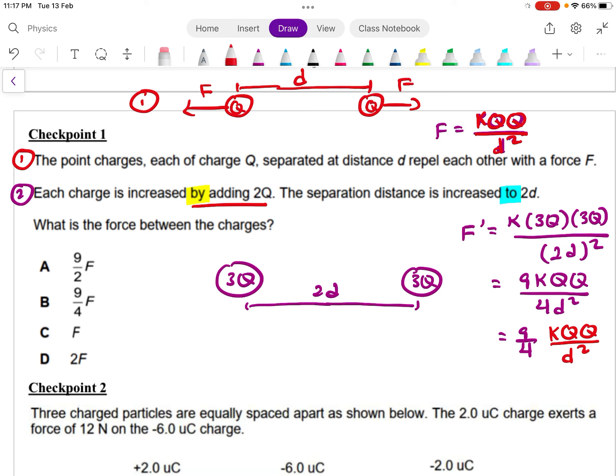So okay, the first situation is that I have F equal to KQQ over D squared, because if you all still remember the formula, right, so it's KQQ over D squared.